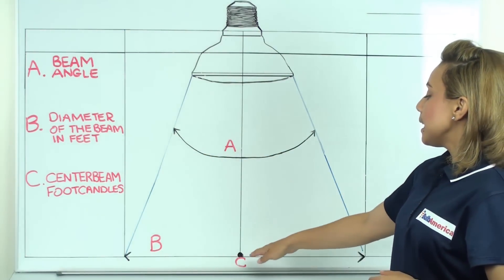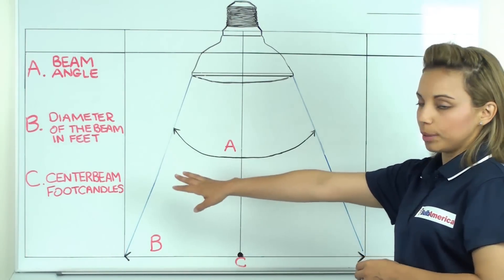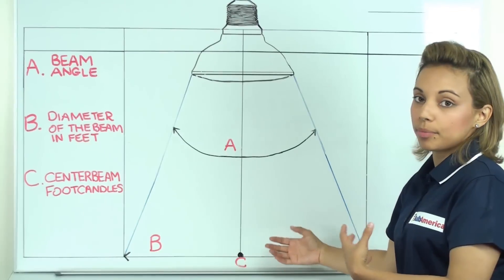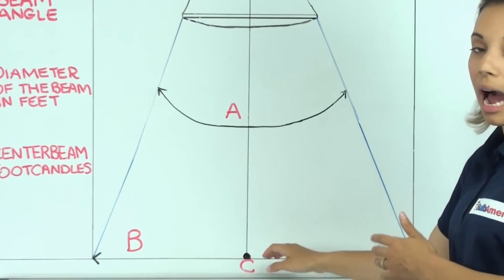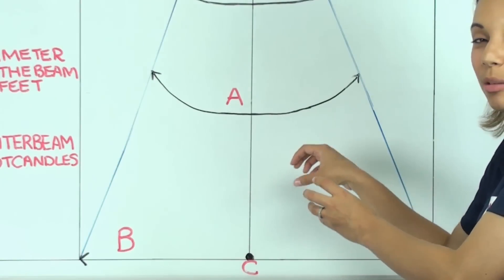So then, in C, this is what we call the Center Beam Foot Candles, or a more popular term is the Hot Spot. So the Hot Spot is where the light is the most intense.